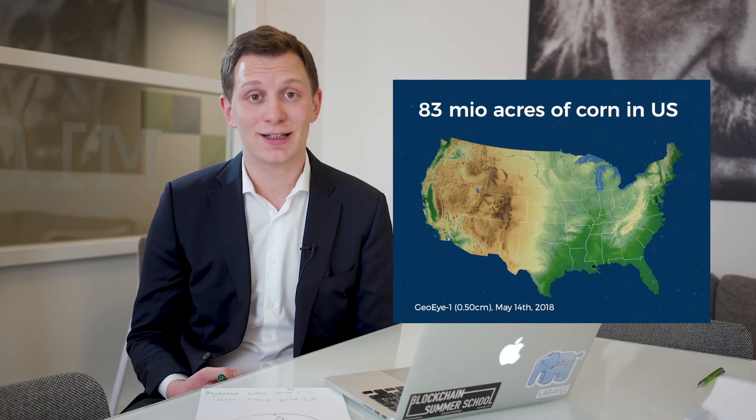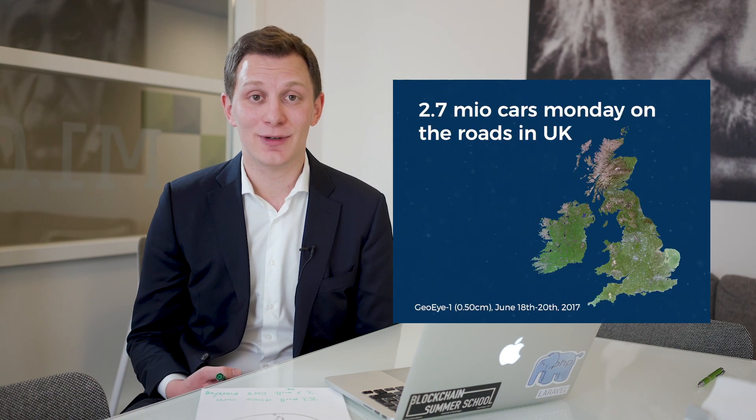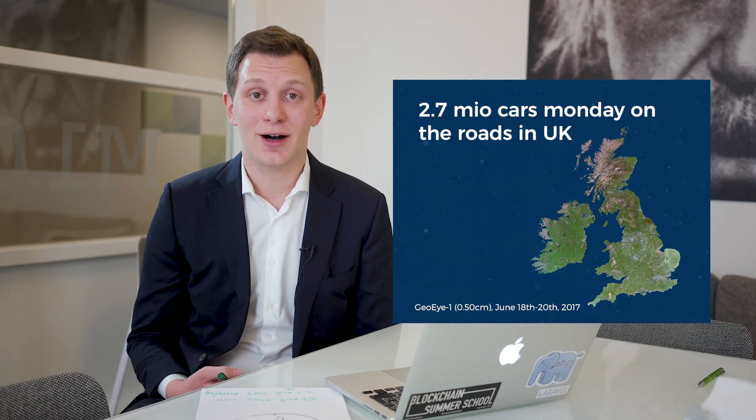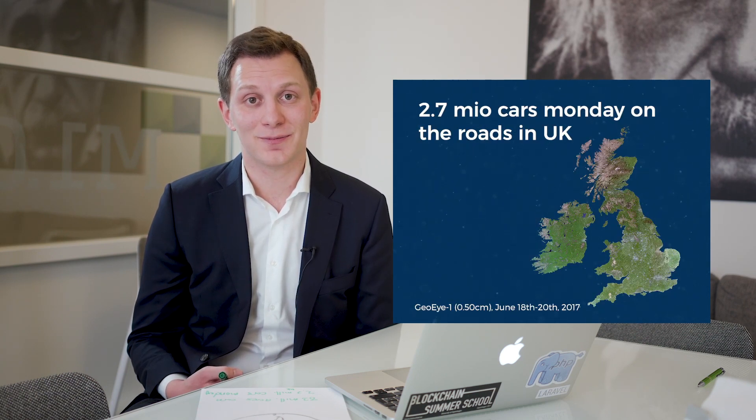Using the techniques from this video, we counted that there's 83 million acres of corn in the United States, and 2.7 million cars Monday morning on the roads in United Kingdom. Think about what else we could count on a satellite image, and what would be relevant for your business. If you come up with any ideas, we'd be glad to hear from you, and you can always reach out to us for help.